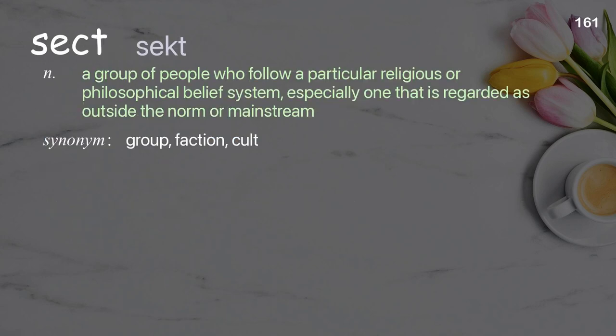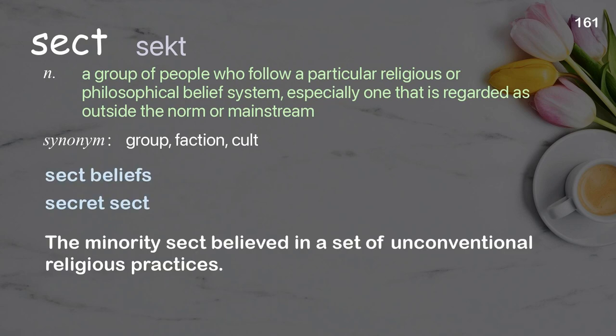Sect: A group of people who follow a particular religious or philosophical belief system, especially one that is regarded as outside the norm or mainstream. Examples: Sect beliefs, Secret sect. The minority sect believed in a set of unconventional religious practices.